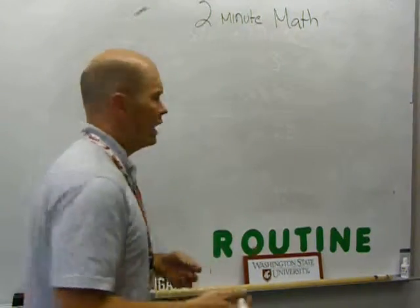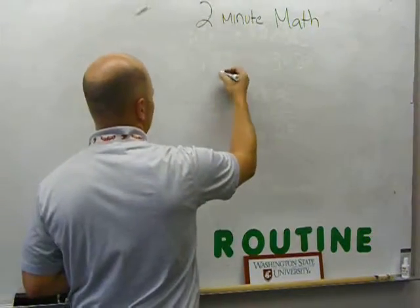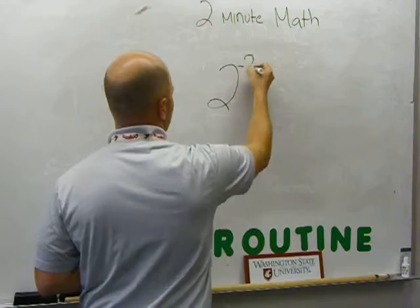So specifically, we started class by looking at an example that looked like this. What happens when you have two raised to the negative second power?